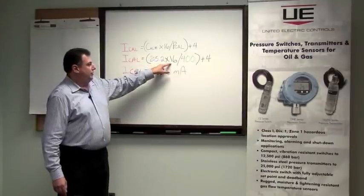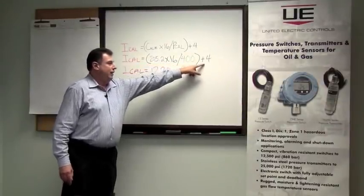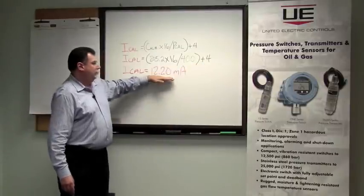Multiply that by 16, divide that by the user-defined range, and add back 4 in order to achieve our ICAL number.